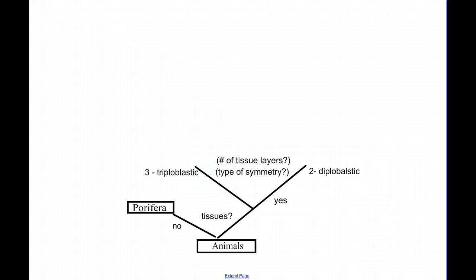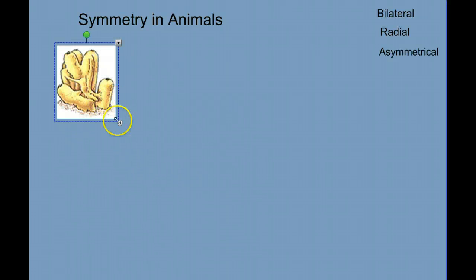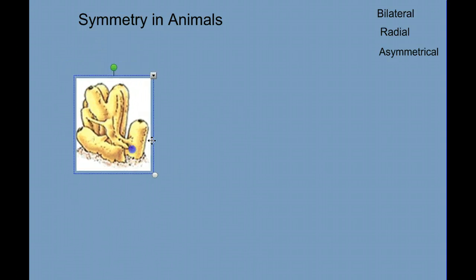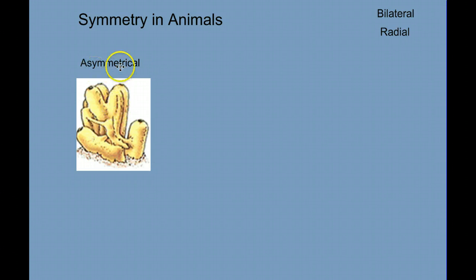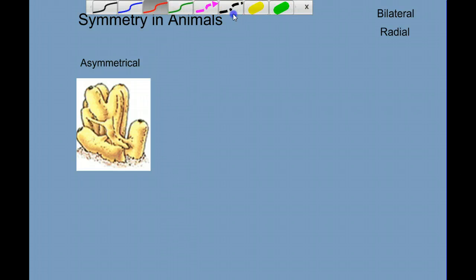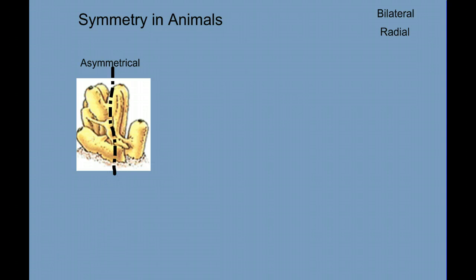Before we go any further, we need to take into account another important characteristic of animals: the idea of symmetry. The sponges, or Porifera — the Parazoa — are asymmetrical. They lack symmetry, meaning there's no place that you could draw a line that would divide them into exactly two mirrored halves. Among the animals that have true tissues, we can divide them based on type of symmetry: they have either radial symmetry or bilateral symmetry.